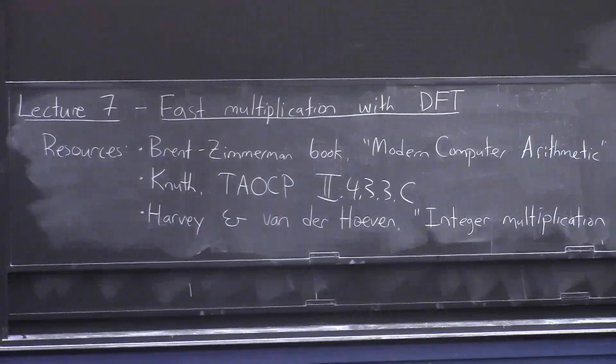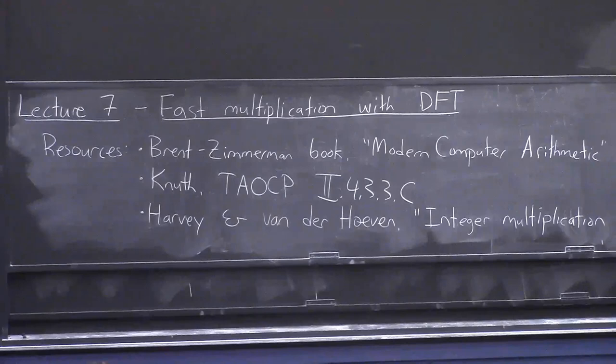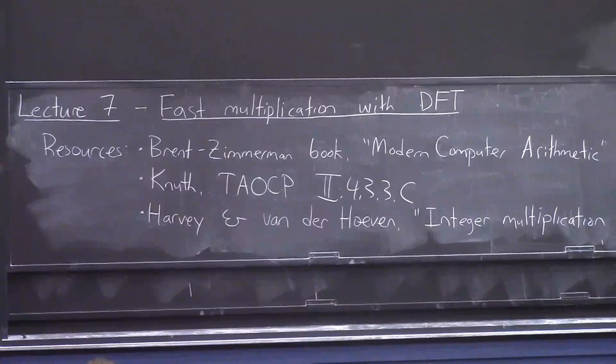OK, good afternoon, everybody. In today's lecture, I'm going to tell you how you can multiply two n-bit numbers in linear time, even faster than it's written here. Of course, the exact running time for it depends on the model of computation. And that's something we talked about last time. So we'll get into it again this time.